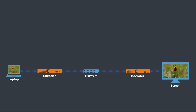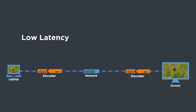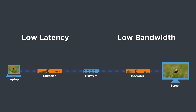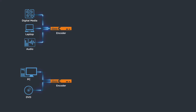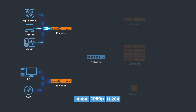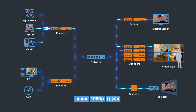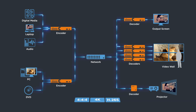With its unique combination of low latency and low bandwidth, you can use a dedicated network for AV streaming distribution or run across your existing IT network. ViewPro hardware lets you encode any source and decode to any number of screens.